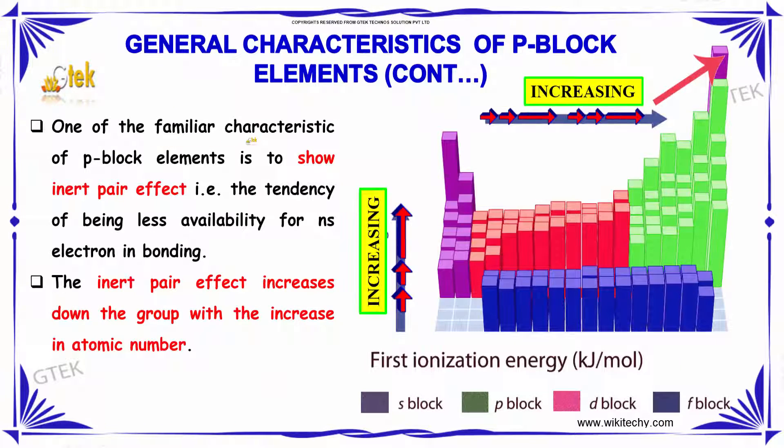One of the familiar characteristics of P-block elements is to show inert pair effect. This is the tendency of being less availability for NS electrons in bonding. The inert pair effect increases down the group with the increase in atomic number.